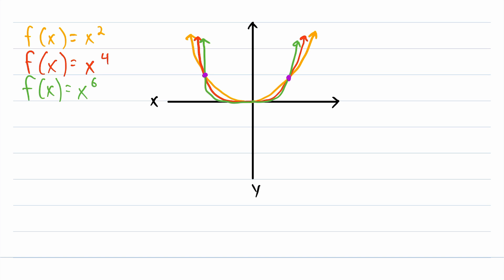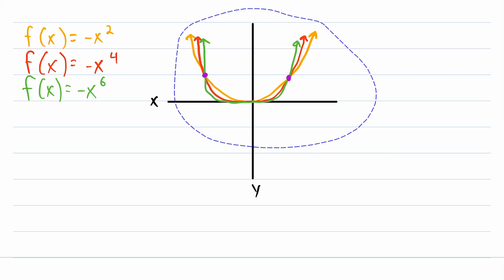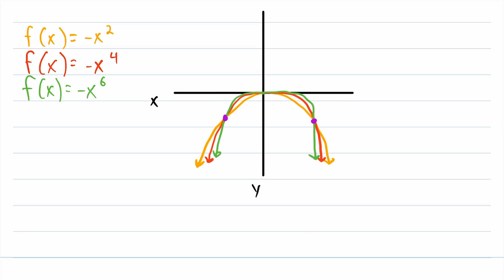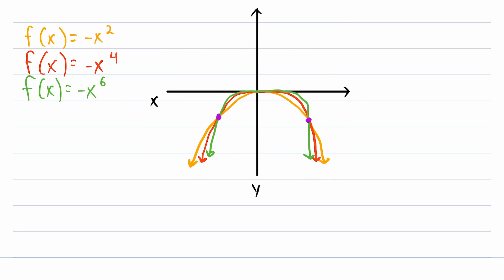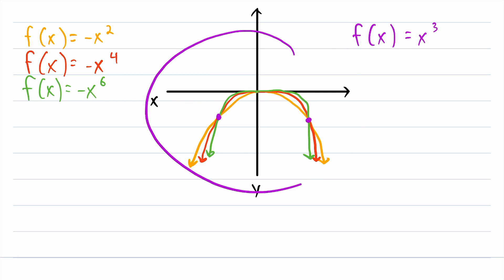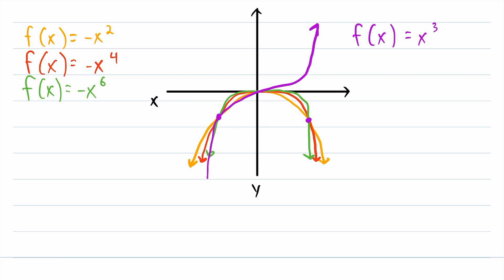Another thing we might be curious about: what happens if we multiply all of these functions by a coefficient of negative 1? So we've got negative x squared, negative x to the power of 4, and negative x to the power of 6. This will make all of our positive y values negative, having the effect of reflecting all of these functions over the x-axis. And if we wanted to, we could graph another power function, f of x equals x to the power of 3. That's a whole lot different than all of our power functions that had positive even exponents.